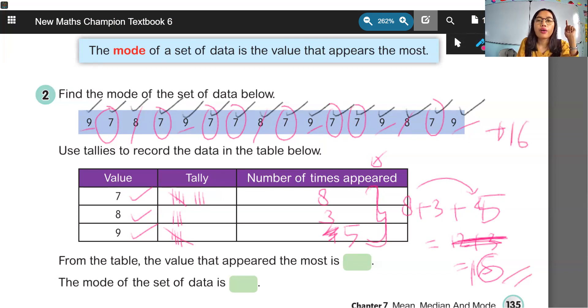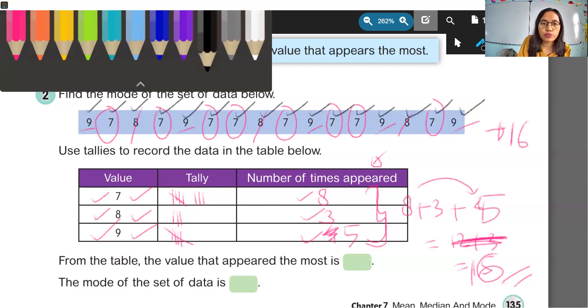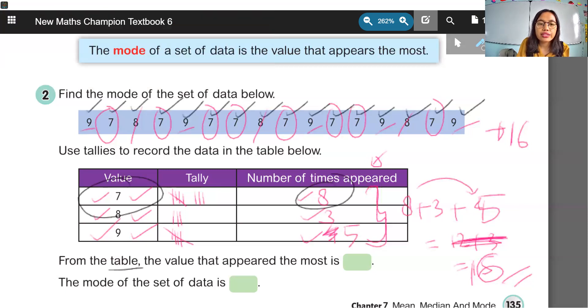Now, we have to find the value that appears most. Jadi, kita mencari value atau nilai berapa sih dari angka tersebut yang sering muncul, yang paling banyak munculnya. Number 7, munculnya sebanyak 8 kali. Wow, banyak. Tapi, coba kita cek angka yang lain. Number 8 muncul, oh, sebanyak 3 kali. Masih di bawah 7. Number 9, oh, munculnya 5 times. Masih di bawah number 7. So, the value that appears the most, yang paling sering muncul adalah angka 7. Sebanyak 8 kali. So, from the tables, the value that appears the most is number 7. The mode of the set of data is 7. Jadi, kita tuliskan angkanya yang sering muncul itu. Bukan berapa kali dia muncul, tapi angka berapa yang paling banyak muncul.